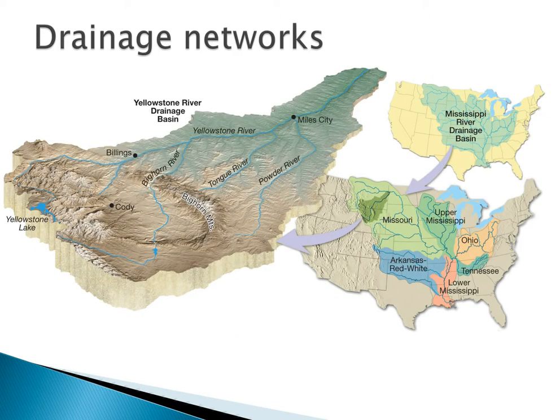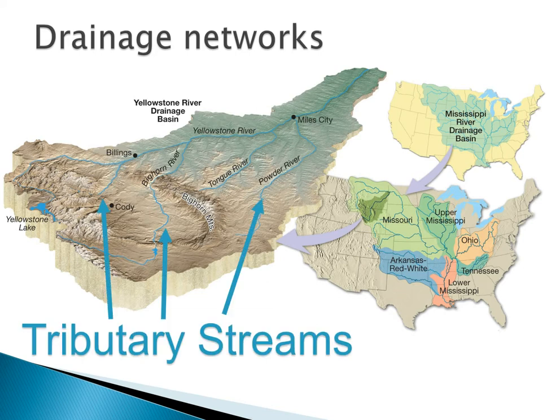Here we're going to look at a drainage network. The side drainages that pour into the big ones are called tributary streams. These streams make up our drainage network. We can learn a lot about the underlying geology by the shape of the network.